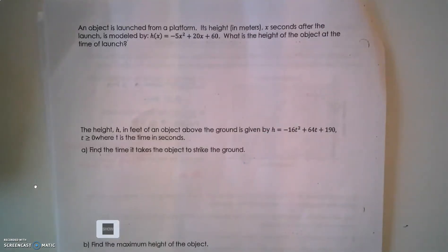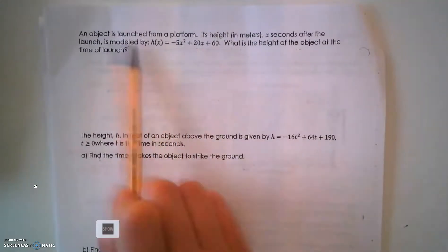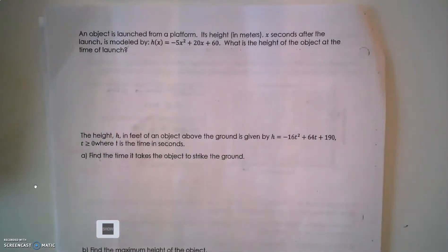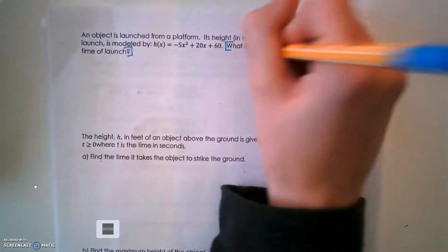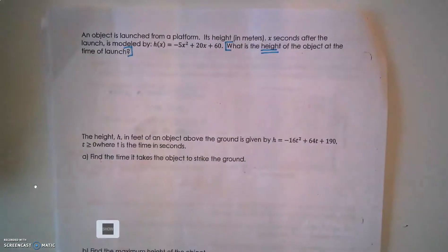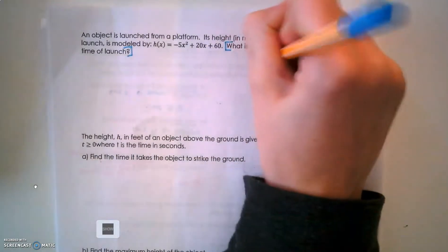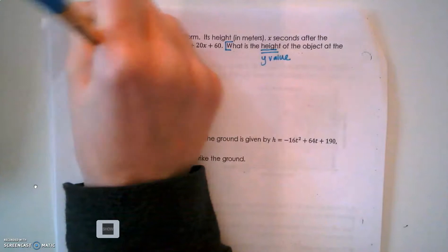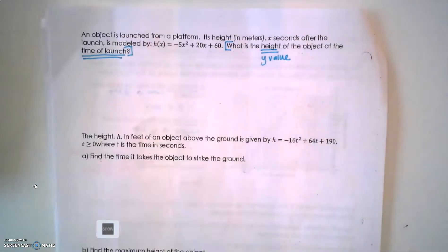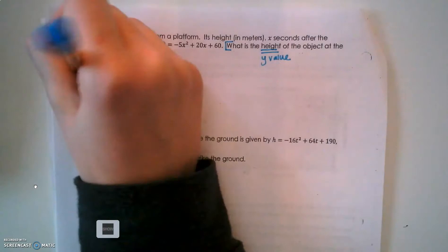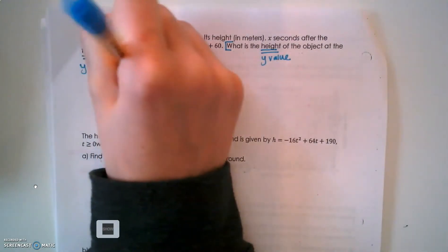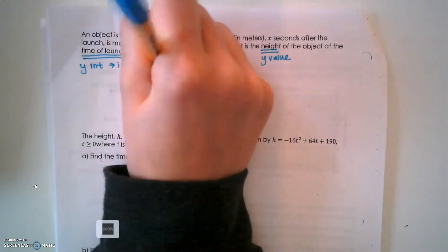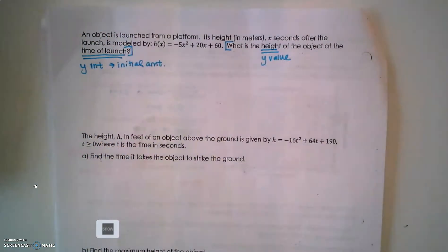I flip the page over to begin some of our examples. In this first example, it gives you an equation. What is the height of the object at the time of launch? Height - that's going to be a y value. At the time of launch, when we've launched this object, that's a y-intercept because that's asking for an initial value.